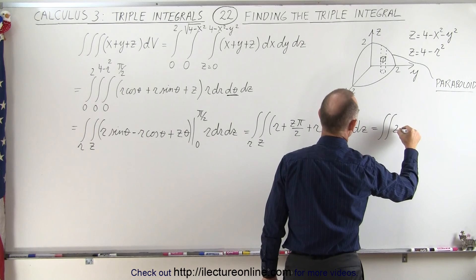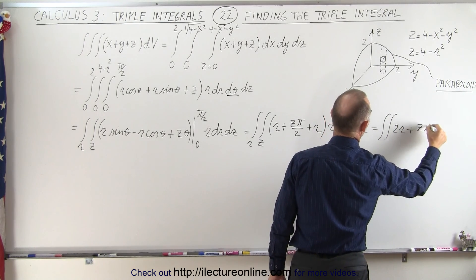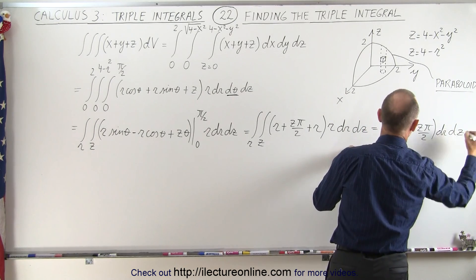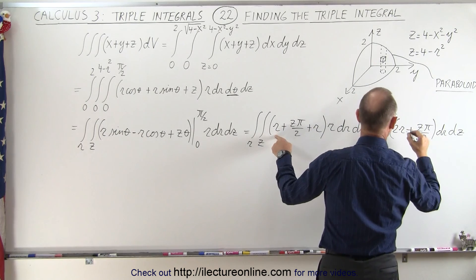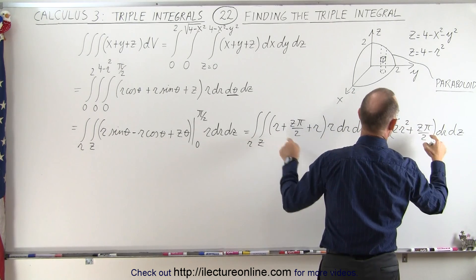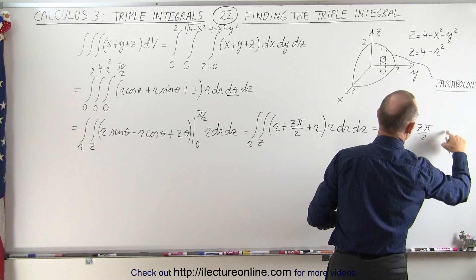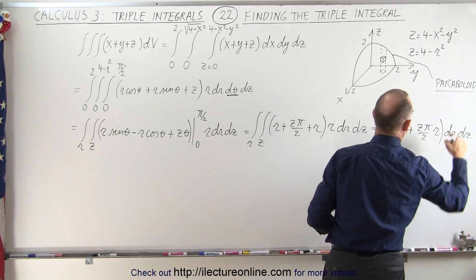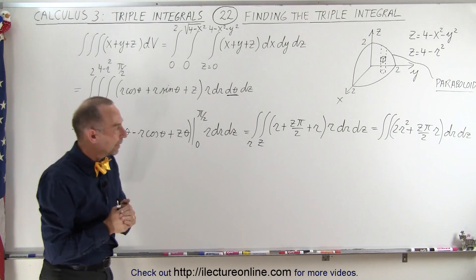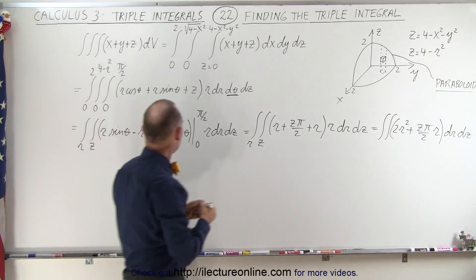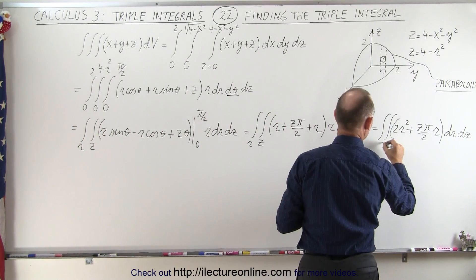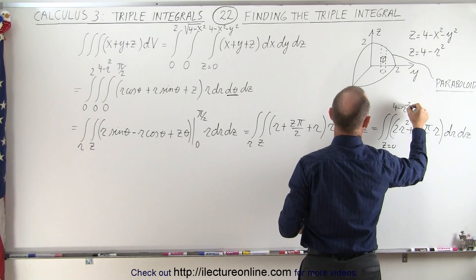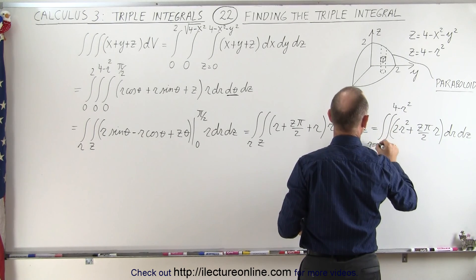Combining the two r terms gives 2r, so we have a double integral of 2r plus z times pi over two, all multiplied by r, giving us 2r squared plus z times pi times r, with dr dz remaining. The limits are z from 0 to 4 minus r squared and r from 0 to 2.